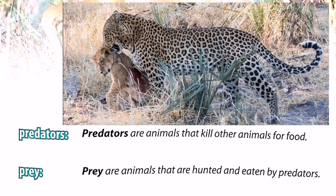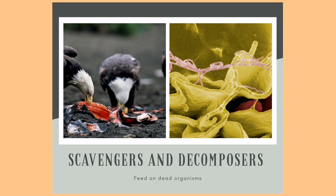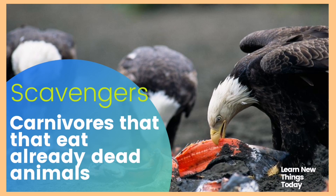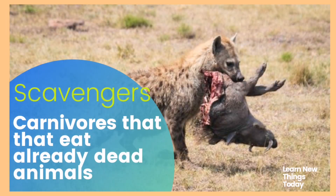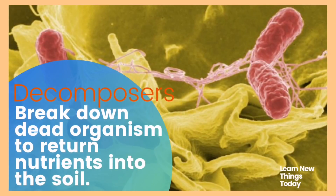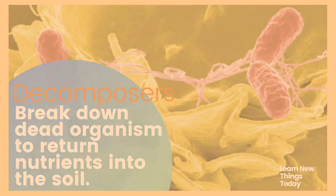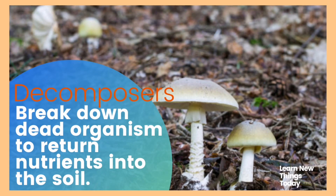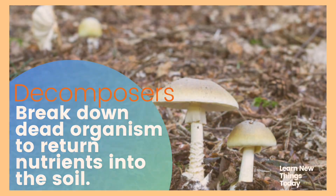The animals that are hunted and eaten by predators are called prey. There are also groups of organisms that rely on dead organisms — called scavengers and decomposers. Scavengers are carnivores that eat already dead animals; examples include eagles and hyenas. Decomposers are not animals but are considered the final eaters in the food chain — these are fungi and bacteria, and they break down dead organisms to return nutrients to the soil.